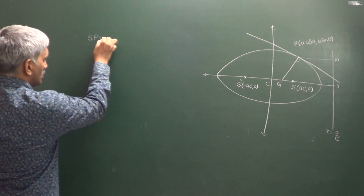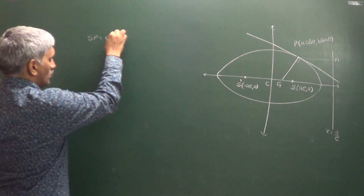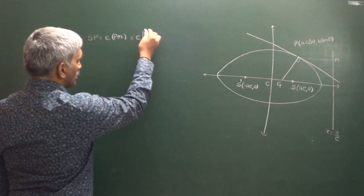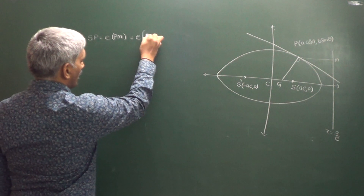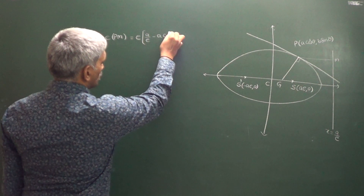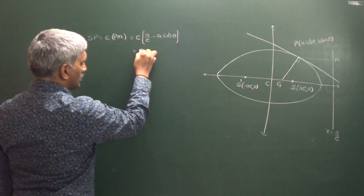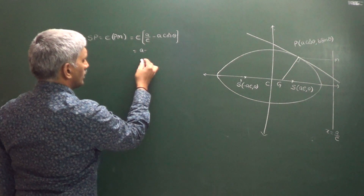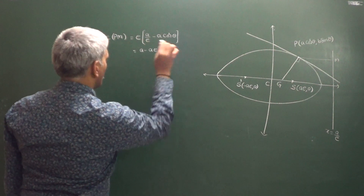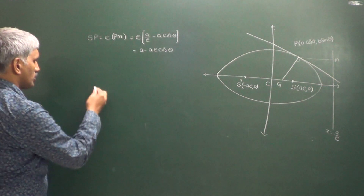ST is nothing but E into PM. We can write this as E into PM, where PM is nothing but A/E minus A cosθ. So we can write this as A minus AE cosθ. That is ST.